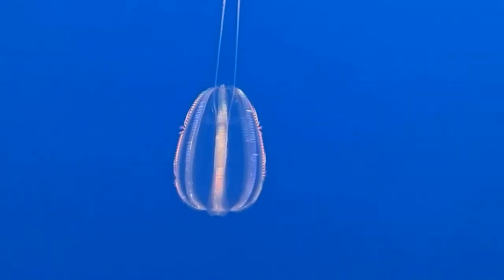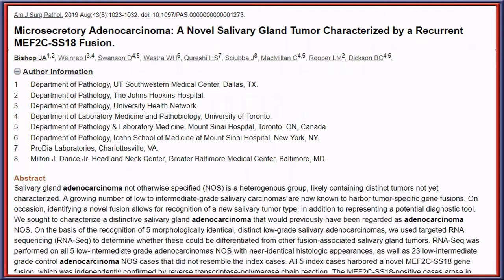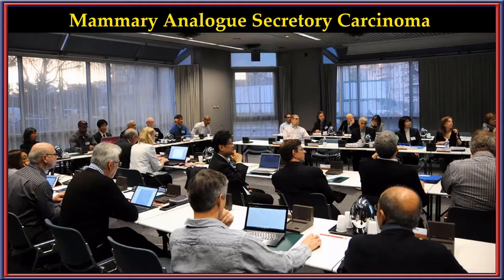For secretory carcinoma prognosis: lymph node metastases are seen in about 25%, local recurrence in 20%, and distant metastasis is uncommon. High-grade transformation is seen in about 5%, and in that setting clinical stage and high-grade transformation are both poor prognostic markers. Microsecretory adenocarcinoma, described recently by Justin Bishop, is associated with an SS18 fusion — more elaborate methodologies will continue to subclassify these tumors. The WHO meeting officially renamed MASC to secretory carcinoma because it is more common in the salivary gland.